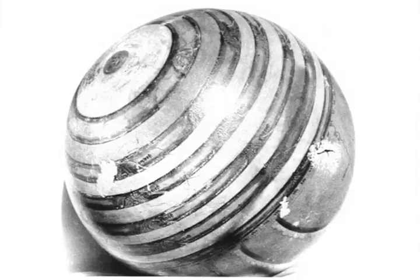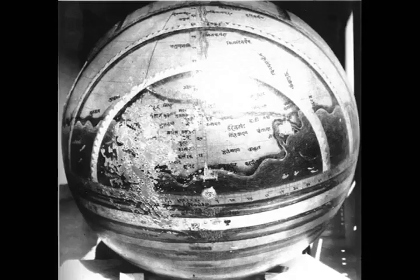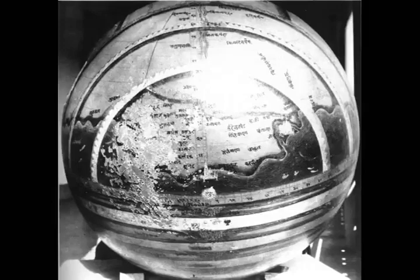Such globes exist in India. Here is one that was probably commissioned by Sawai Jai Singh, Raja of Jaipur, in the early 18th century. In this globe, the land area between the equator and the mountain arc is Bharata Varsha, corresponding to greater India.